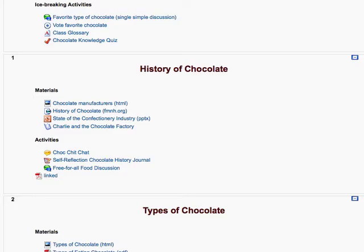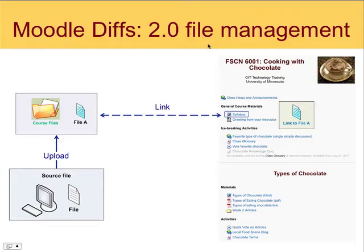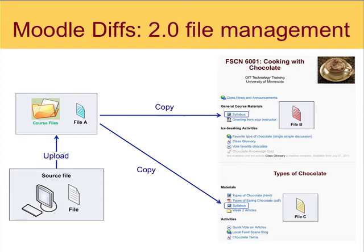Let's go back to the PowerPoint and talk about some other options available in Moodle 2. In addition to linking to files, we are now also able to copy a file from Course Files to a place in a section. We can copy a file to multiple places, but I want to stress — these files are not linked, they are copied. They're completely unique, standalone files. So if you deleted the source file in Course Files, file B and file C would still exist where they are. They're copies, not links.